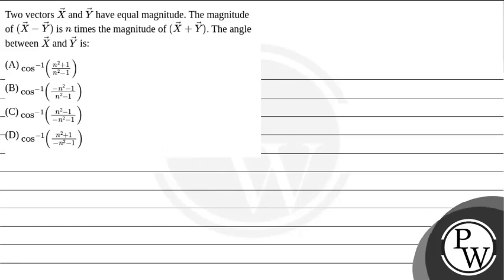The question says two vectors x vector and y vector of equal magnitude. The magnitude of x vector minus y vector is n times the magnitude of x vector plus y vector. The angle between x vector and y vector is: option A cos inverse (n²+1)/(n²-1), option B cos inverse (-(n²-1))/(n²-1), option C cos inverse (n²-1)/(-(n²-1)), and option D cos inverse (n²+1)/(-(n²-1)).